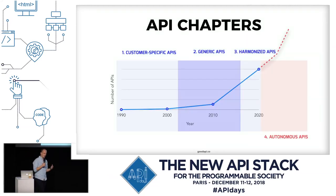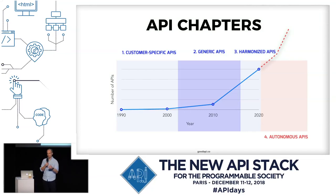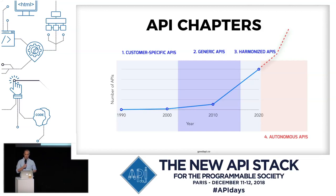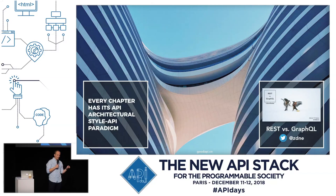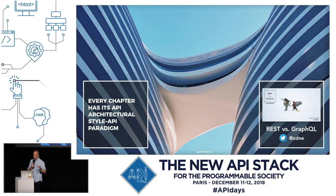To understand this, we need to look at the past — the last 30 years of APIs — and what were the chapters we walked through, and what are some of the patterns I'm seeing working with all these customers. We start with customer-specific APIs, and I want to point out that every chapter has its own predominant API style.